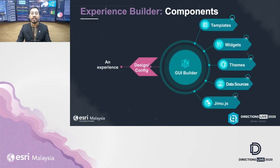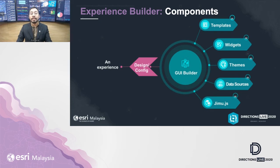Let's look at the components of the GUI Builder. You have the canvas to create a new application or responsive web page, with the ability to add templates or start from scratch. Next, you have widgets, which power the dynamic capability of your applications — adding maps, functional buttons, text, descriptions, and lists. Themes allow you to adjust the look and feel, changing colors or applying branding. Data sources are important to make functionalities work for your application. Lastly, it is based on the new JavaScript library.